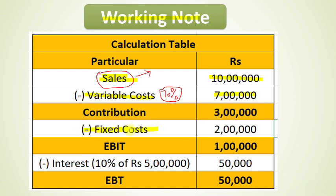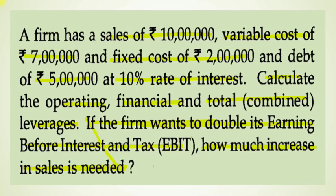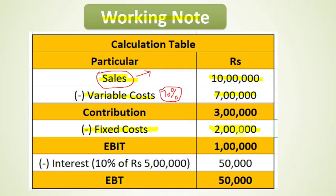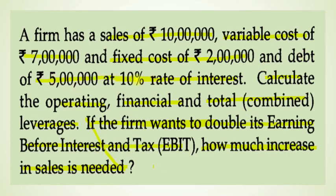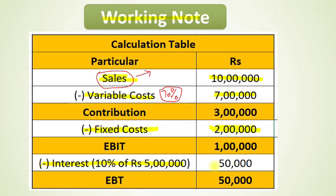From contribution, we deduct fixed costs to get Earnings Before Interest and Tax (EBIT). Fixed costs are 2 lakh rupees, so EBIT = 3 lakh minus 2 lakh = 1 lakh rupees. Then we deduct interest: 10% of 5 lakh rupees debt = 50,000 rupees. So Earnings Before Tax (EBT) = 1 lakh minus 50,000 = 50,000 rupees.